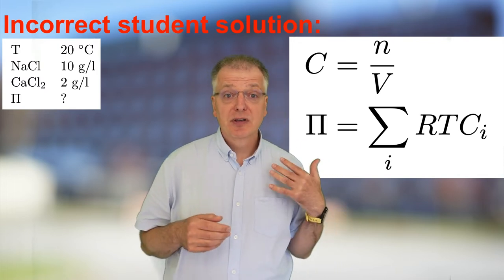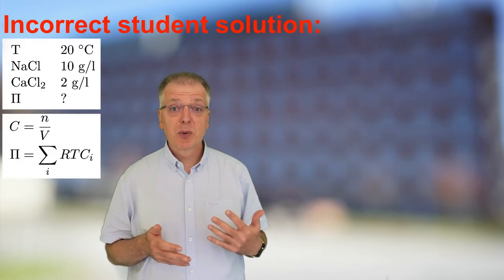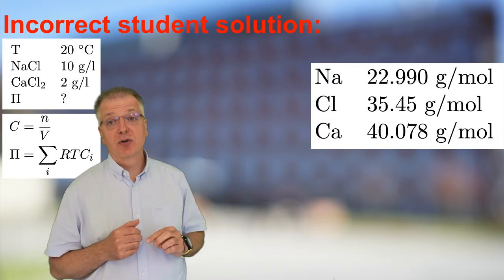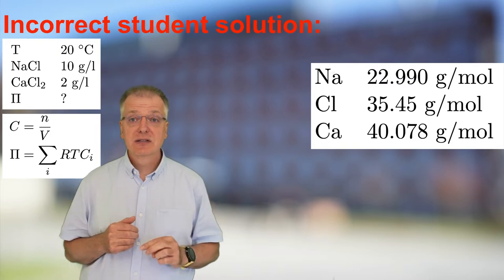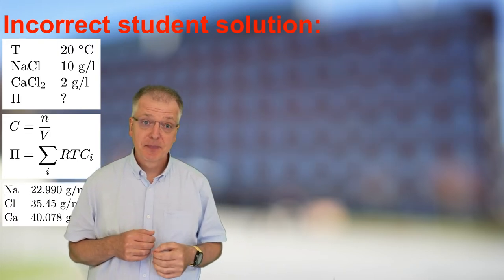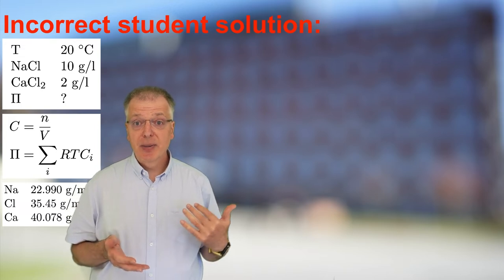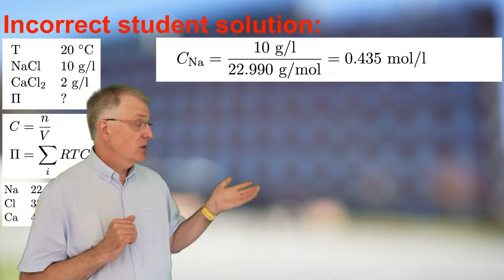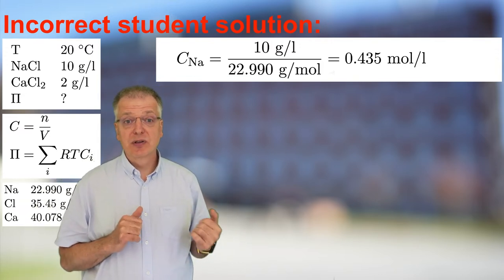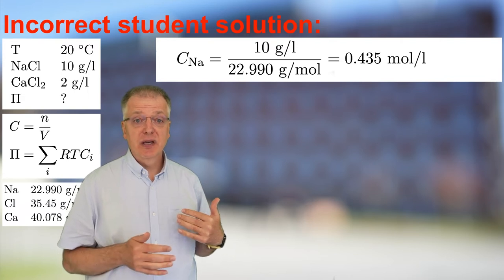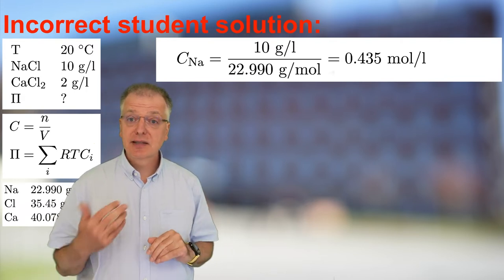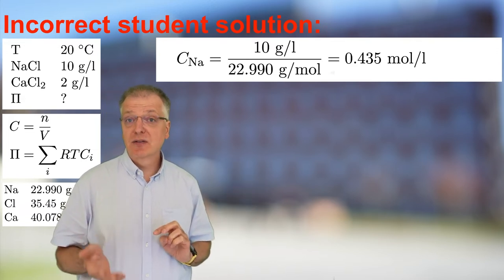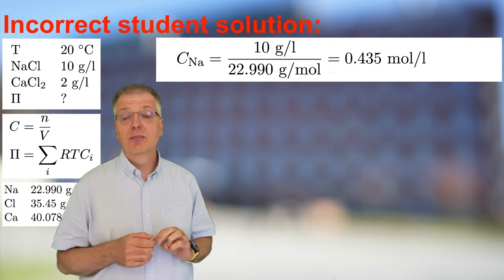Furthermore, we can check the periodic table of elements and conclude that the molar weights for sodium, chloride, and calcium are 22.990, 35.45, and 40.078 gram per mole, respectively. An incorrect student solution may look like this — try now to spot the errors. Assuming that sodium chloride and calcium chloride both dissociate completely, we get the concentration of sodium as 10 gram per liter divided by 22.990 gram per mole, which gives us 0.435 mole per liter.